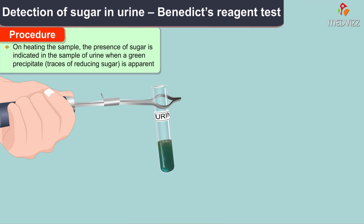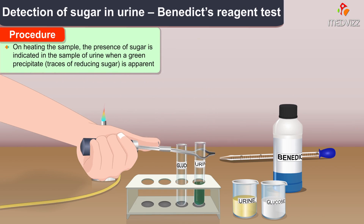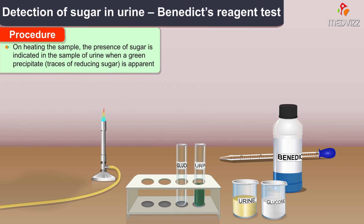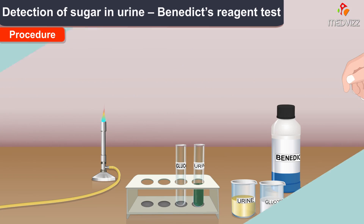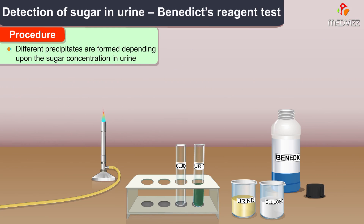The presence of sugar is indicated in the sample of urine when a green precipitate is apparent in the test tube, which denotes traces of reducing sugars. Different precipitates are formed depending upon the sugar concentration in the urine.